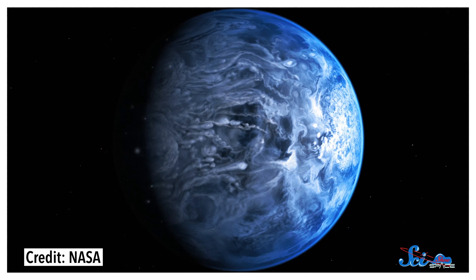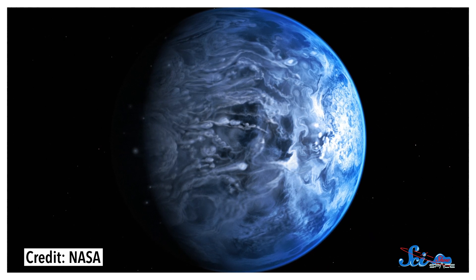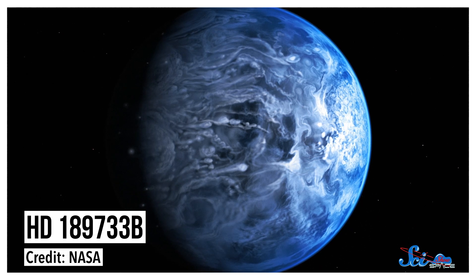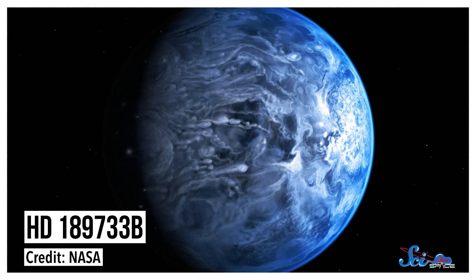In 2013, astronomers figured out an exoplanet's color for the first time. Its name is HD 189733 b, and as far as we can tell, it's blue.